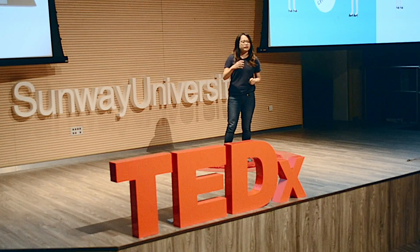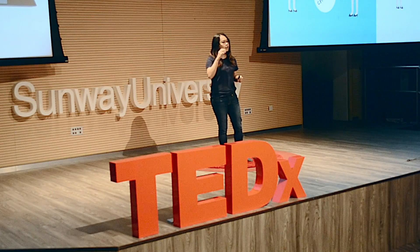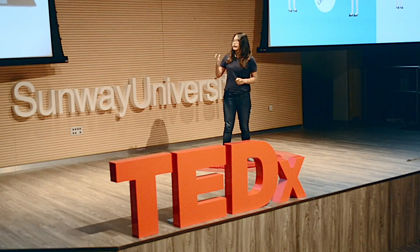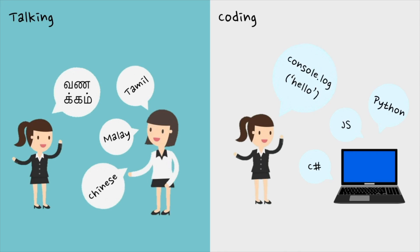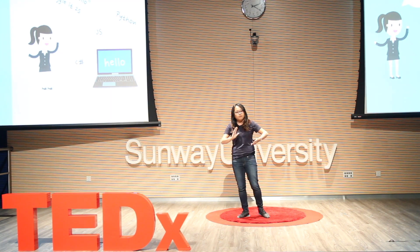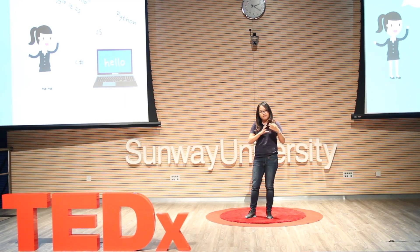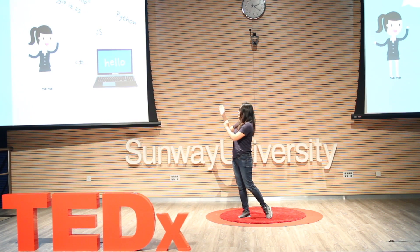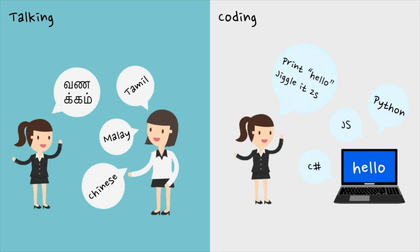We need to give a set of very precise instructions to the computer to tell it what you expect it to do. For example, if I want to print the word 'hello' on the screen with some animation, I need to say exactly: please print 'hello' and then jiggle it for 2 seconds only. Then the computer takes my instructions, runs the code, processes it, and displays 'hello' on the screen.